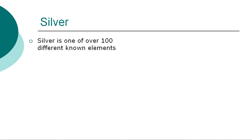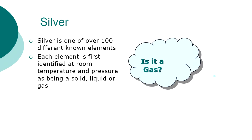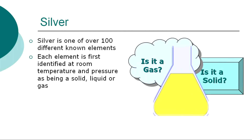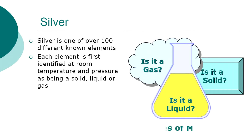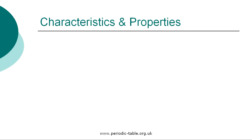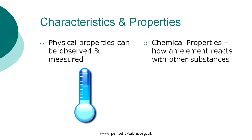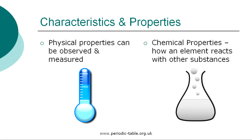The element silver is one of over 100 different chemical elements known to modern chemistry. Each element is first identified at room temperature and pressure as being a solid, liquid, or gas, referred to as states of matter. Silver is a solid at normal room temperature and pressure. Each element has physical properties that can be observed and measured, such as color, density, and odor. The chemical properties are the characteristics that determine how a substance will react with other substances, such as water or oxygen.